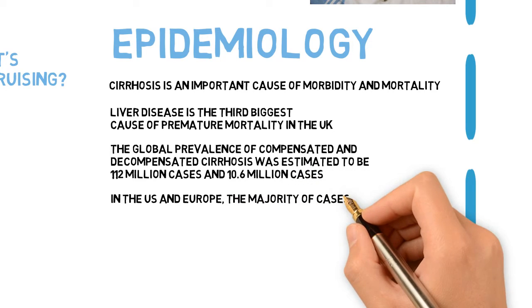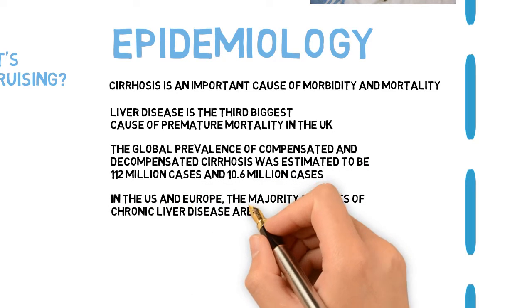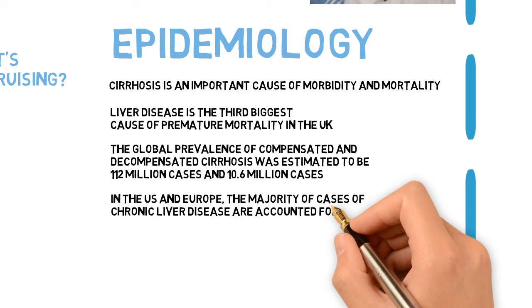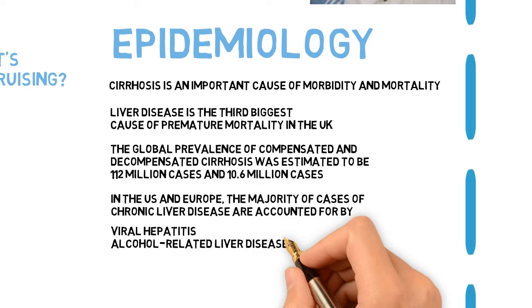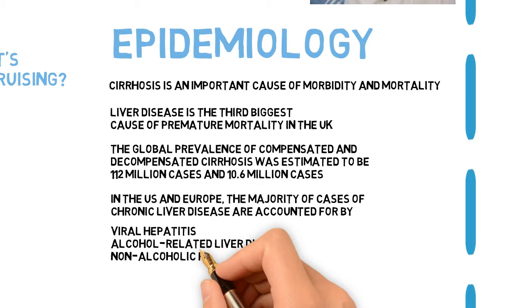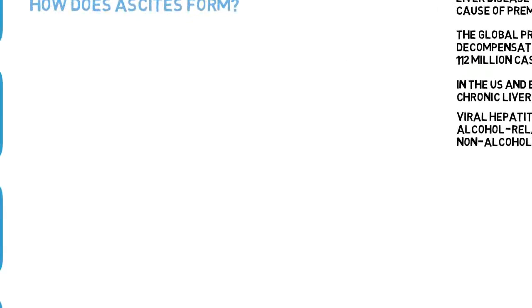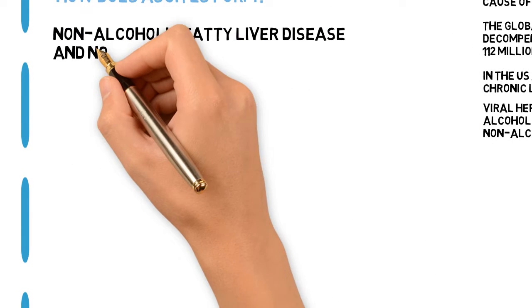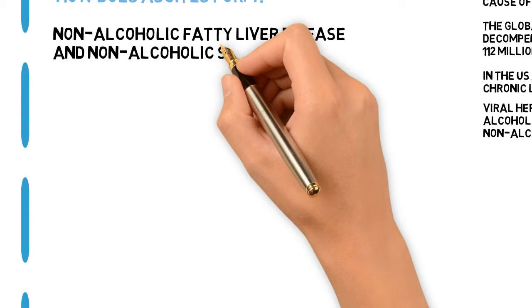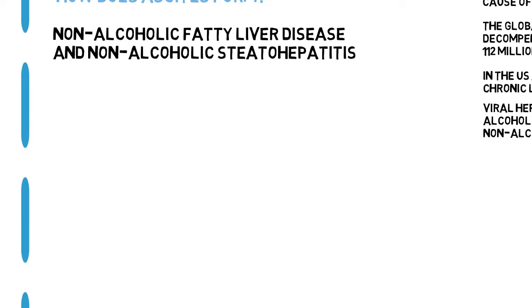In the US and Europe, the majority of cases of chronic liver disease are accounted for by viral hepatitis, alcohol-related liver disease, and non-alcoholic fatty liver disease. The prevalence of non-alcoholic fatty liver disease and non-alcoholic steatohepatitis has increased in parallel with the obesity epidemic.